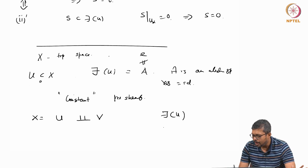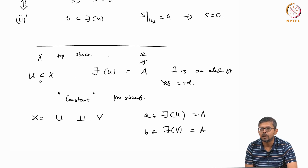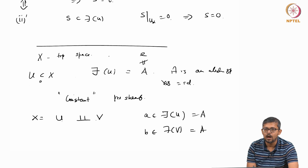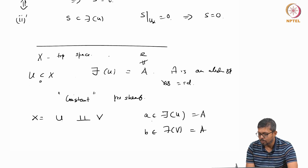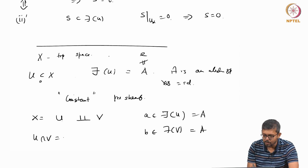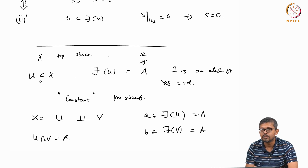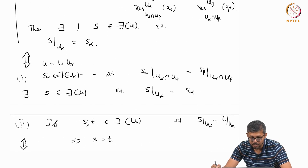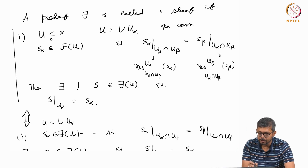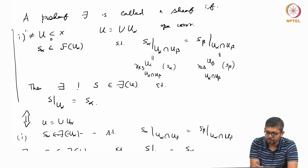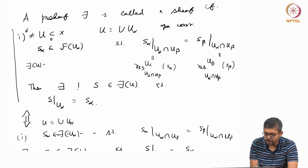Take F of U and F of V, both equal to A. Pick two different elements a and b in A. Now U intersection V is empty. As a convention, for the empty set, the group associated with it is the trivial group, since the empty set is always an open subset and one must define F on it.